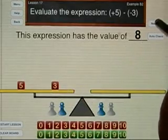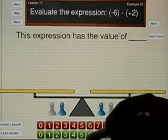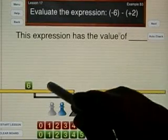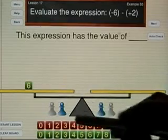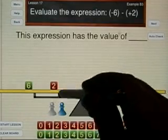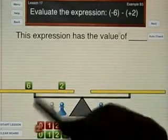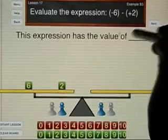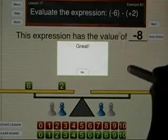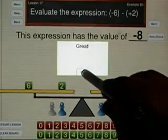In this example we have a negative 6 and we need to subtract a positive 2, but there's no red to subtract here. So why don't we do what we did before? Let's add a red 2 and a green 2 since they have a value of 0. And now I can take away my positive 2, and so the answer will be a green 8 or a negative 8. So please continue and try the next example on your own.